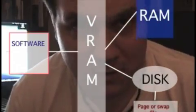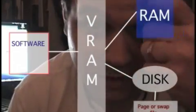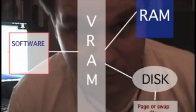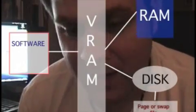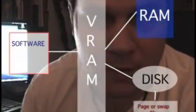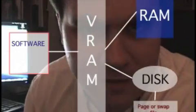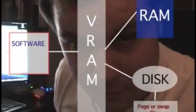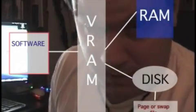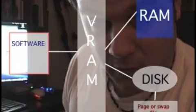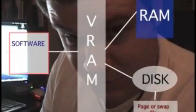You've seen this in Windows — sometimes you'll get a message saying you're running low on virtual memory. Basically, the virtual memory is running out of places to go, and it's asking for a larger page file so it can use more of it and swap more.